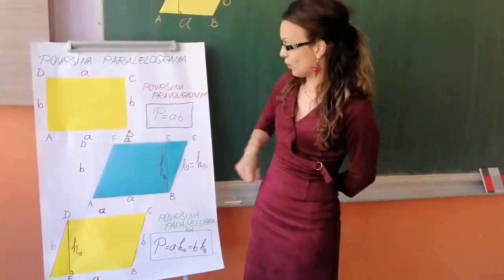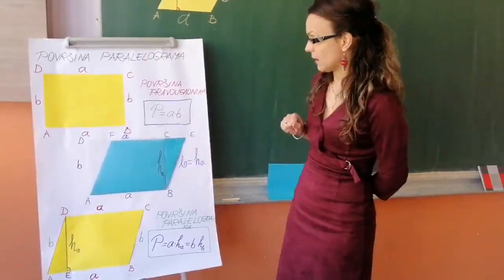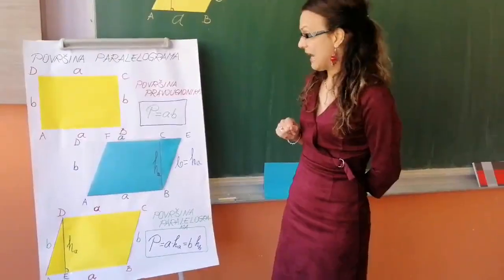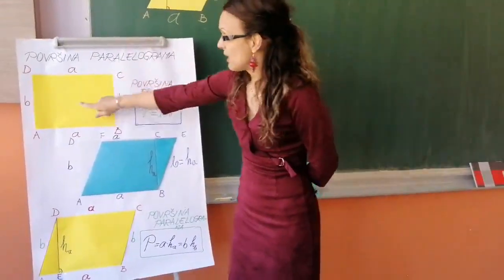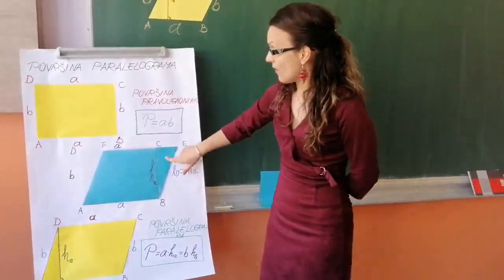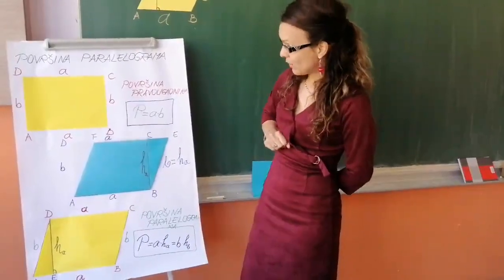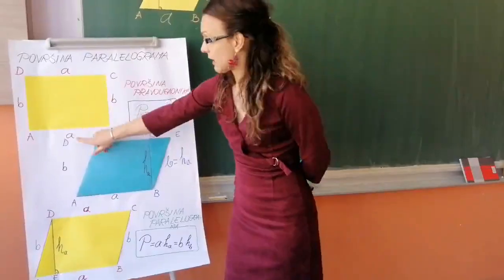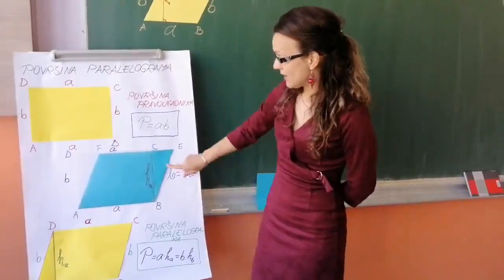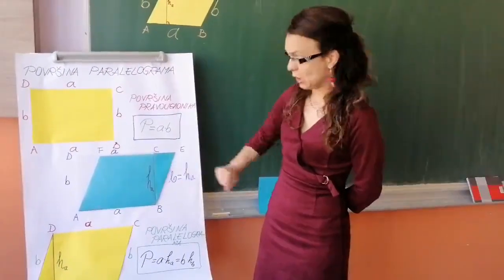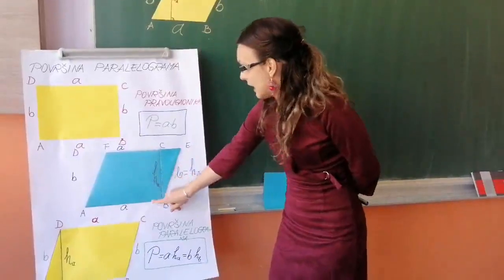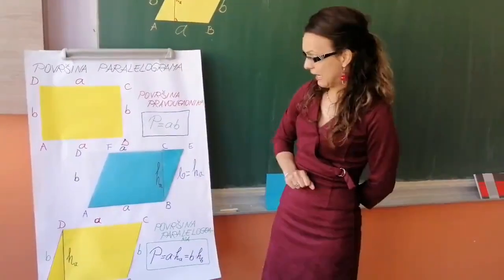Pa će, obzirom da smo mi dobili figuru drugog oblika ali iste površine, površina mog pravougaonika odgovarati površini novonastog paralelograma. Pa ako je površina pravougaonika glasila A puta B, onda će površina mojega paralelograma glasiti A puta ha.